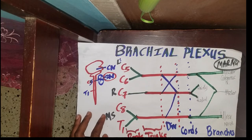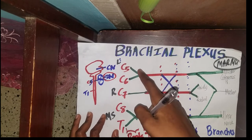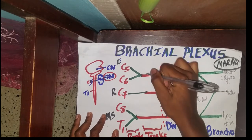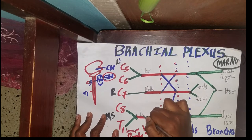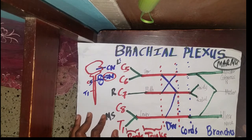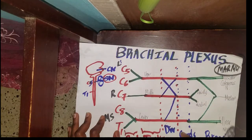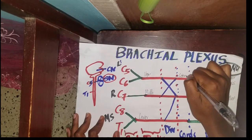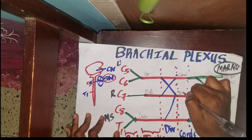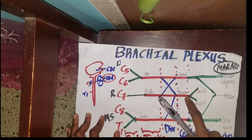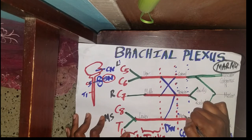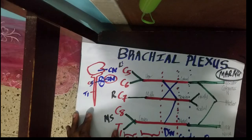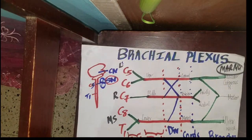Let's label the trunks: the one at the top is the upper trunk, the next is the middle trunk, and then the lower trunk. For the cords: the top one is the lateral cord, the second is the posterior cord — the posterior cord gives your axillary and radial nerves — and the bottom one is your medial cord.